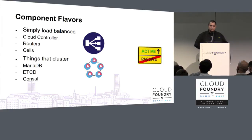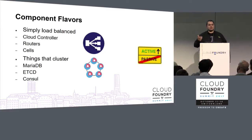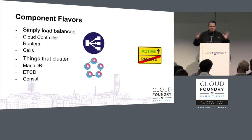Next to these two flavors, we also have components that follow an active-passive model. For example, the Diego database does this: you can run multiple replicas, but only one will be active at the same time. They connect to Consul, grab a lock from there, one of them is elected as master and the others are passive. Whenever the master goes down, one of the passives will be promoted and becomes the active component. We need to support all of these configurations, and this is where Kubernetes comes in.